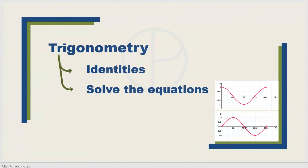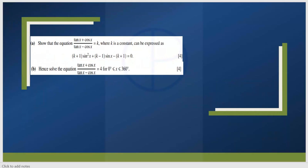Next is trigonometry. Definitely you will get a question to prove an identity, and after proving the identity there will be some equation to solve. You will get around a 7 to 8 mark question. For example, you may be shown a statement and asked to prove the identity, then solve it. While solving the equation you have to take care of the interval or limit that is given, and based on that you need to write the correct number of solutions.